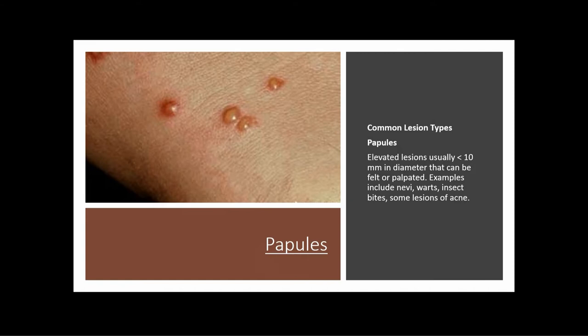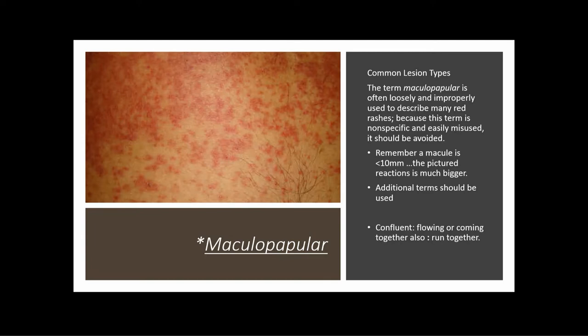The next term is papules. Papules are elevated lesions, usually less than 10 millimeters in diameter, that can be felt or palpated. Examples include warts, insect bites, and some lesions of acne. Importantly, the term 'maculopapular' is often loosely and improperly used to describe many rashes. Because the term is nonspecific and easily misused, it should be avoided. A macule is less than 10 millimeters, so if you have a larger reaction in front of you, calling it maculopapular won't be specific. Additional terms should be used, like 'confluent,' meaning flowing or coming together. You could say the patient had macular and papular lesions that are confluent — that paints a better picture for your physician.